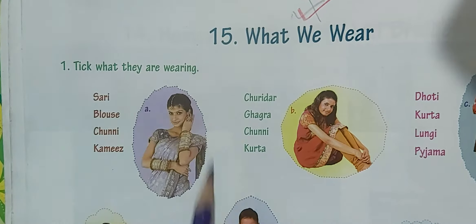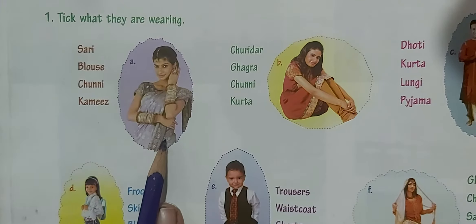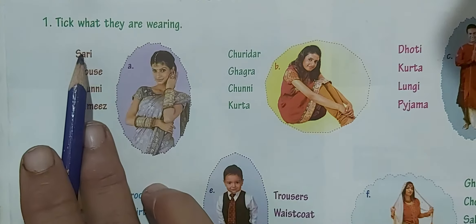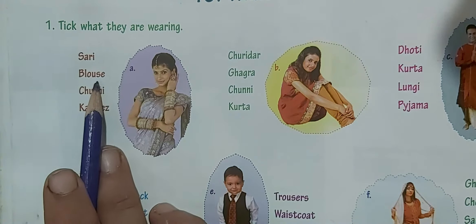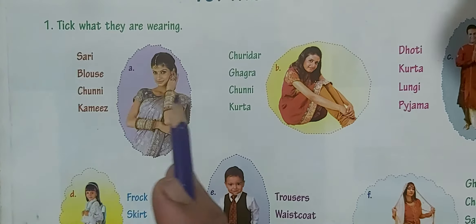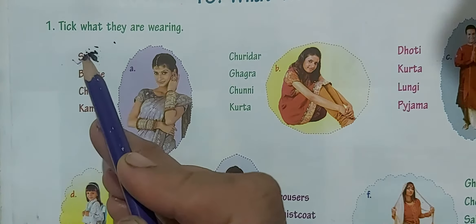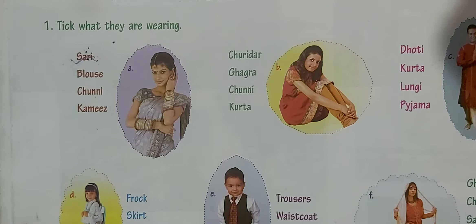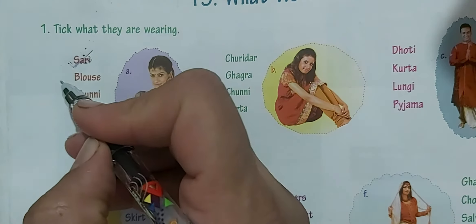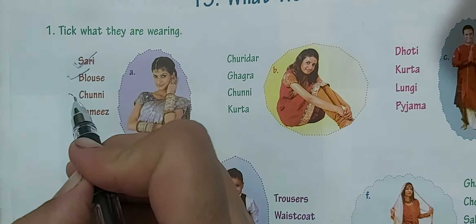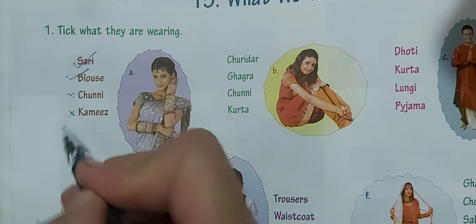Tick what they are wearing. The first picture is of a woman. She is wearing a saree. The options are: saree, blouse, chunni, kamees. Saree — she is wearing it, so tick. Blouse — tick. No chunni — cross. No kamees — cross.